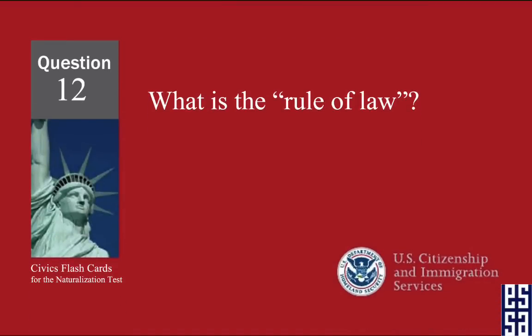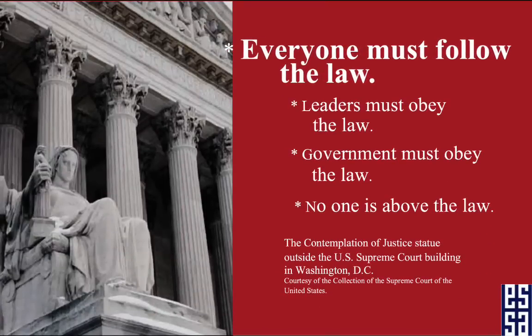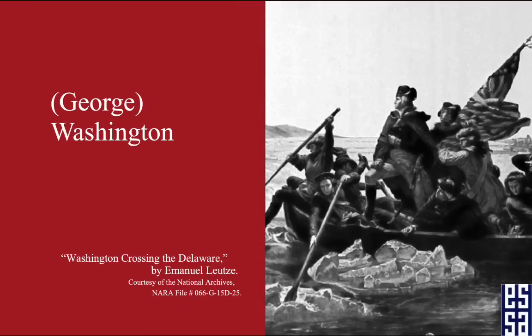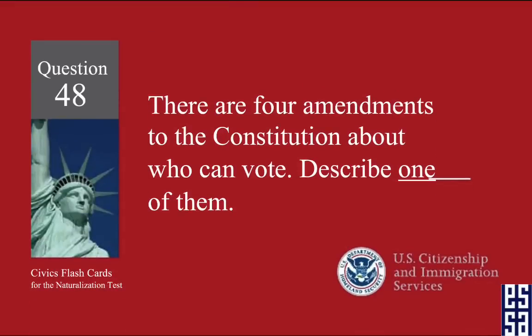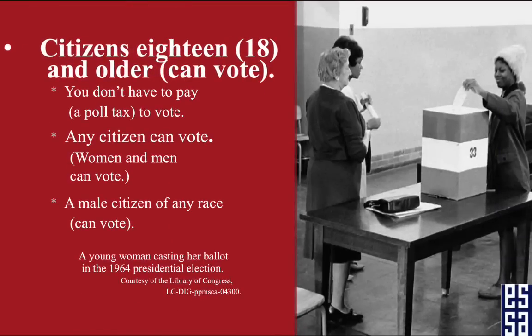What is the rule of law? Everyone must follow the law. Who was the first president? George Washington. There are four amendments to the Constitution about who can vote. Describe one of them. Citizens 18 and older can vote.